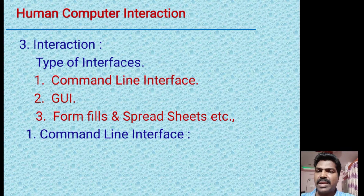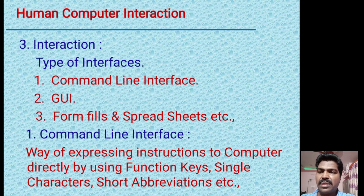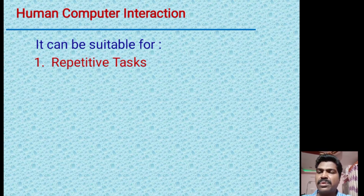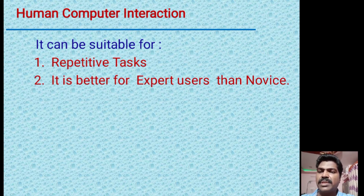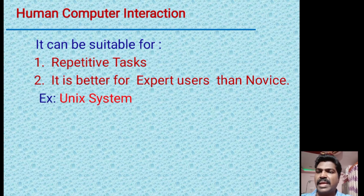First, the command-line interface is a way of expressing instructions to a computer directly by using function keys, single characters, or short abbreviations. To use a command-line interface, one should have knowledge of using computers and some commands. It is suitable only for repetitive tasks and is better for expert users than novice users. An example of a command-line interface is the UNIX system.